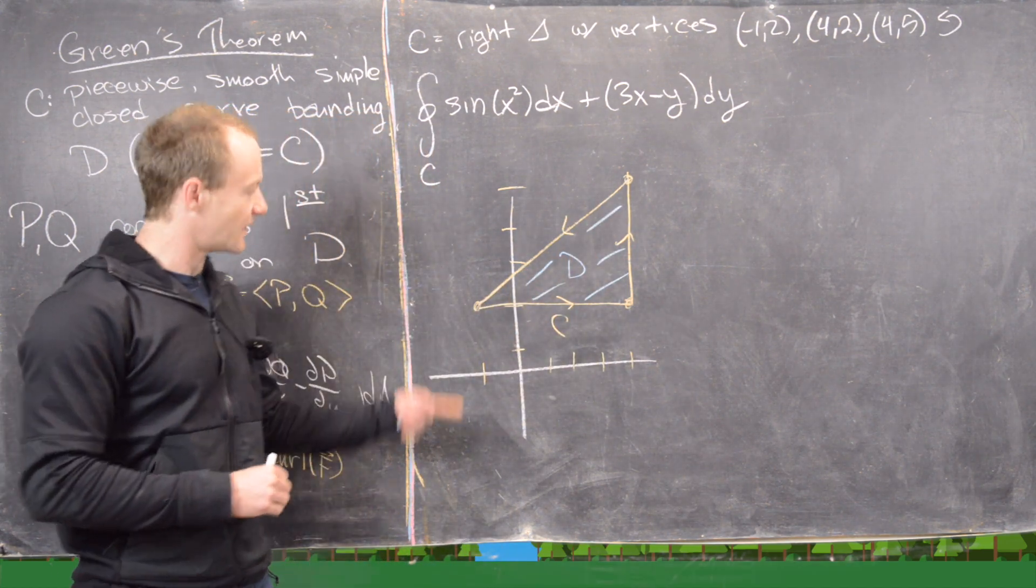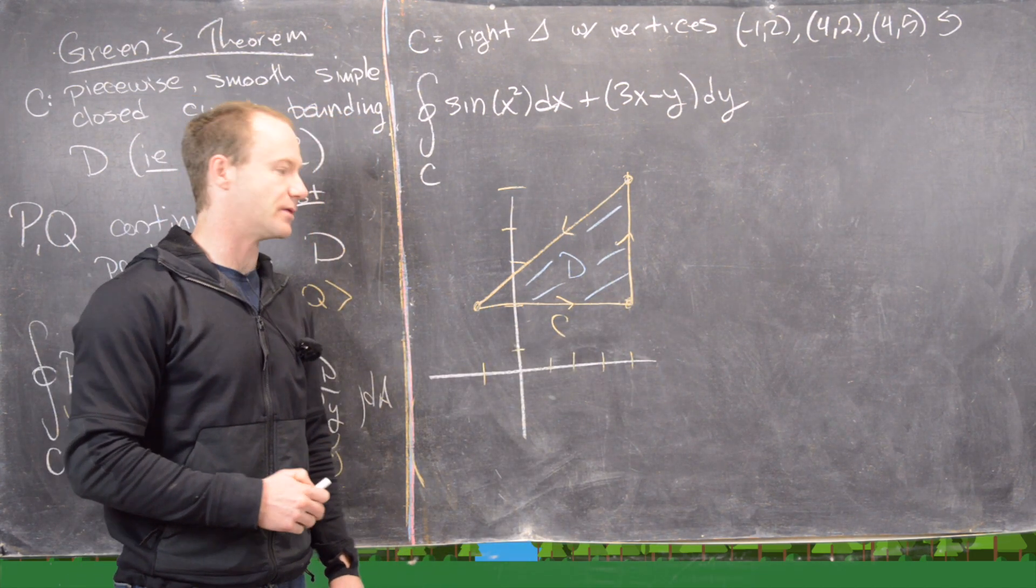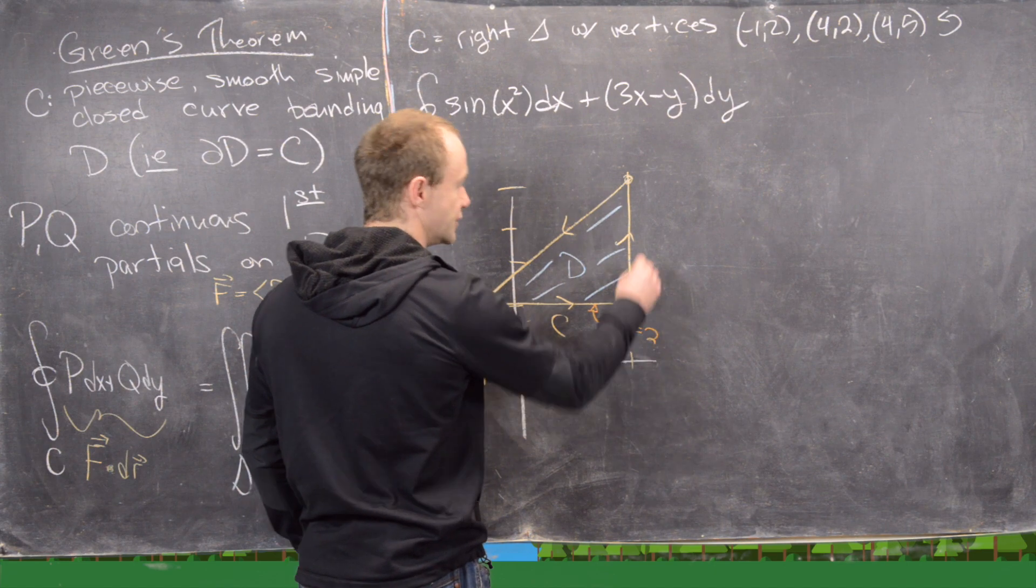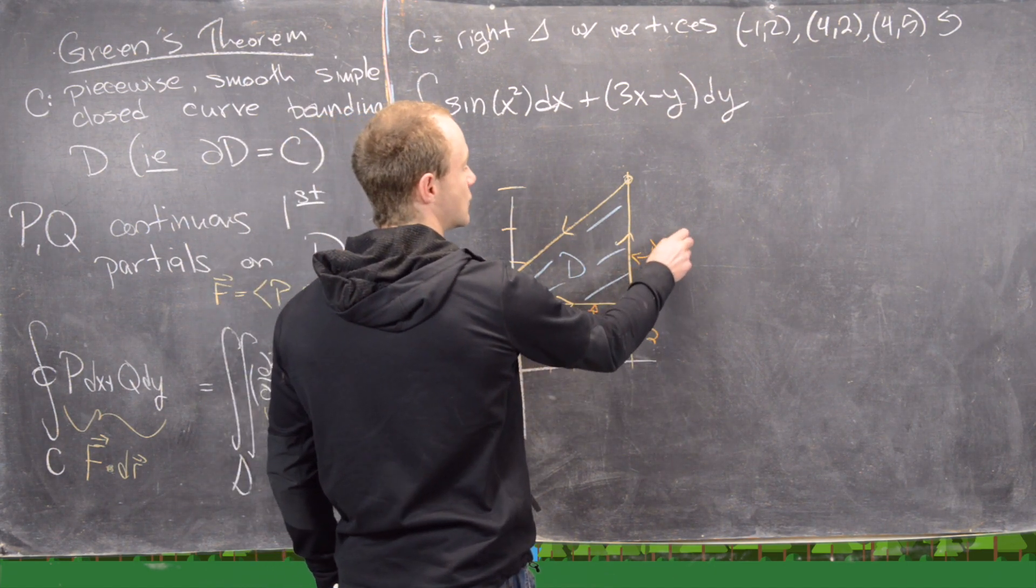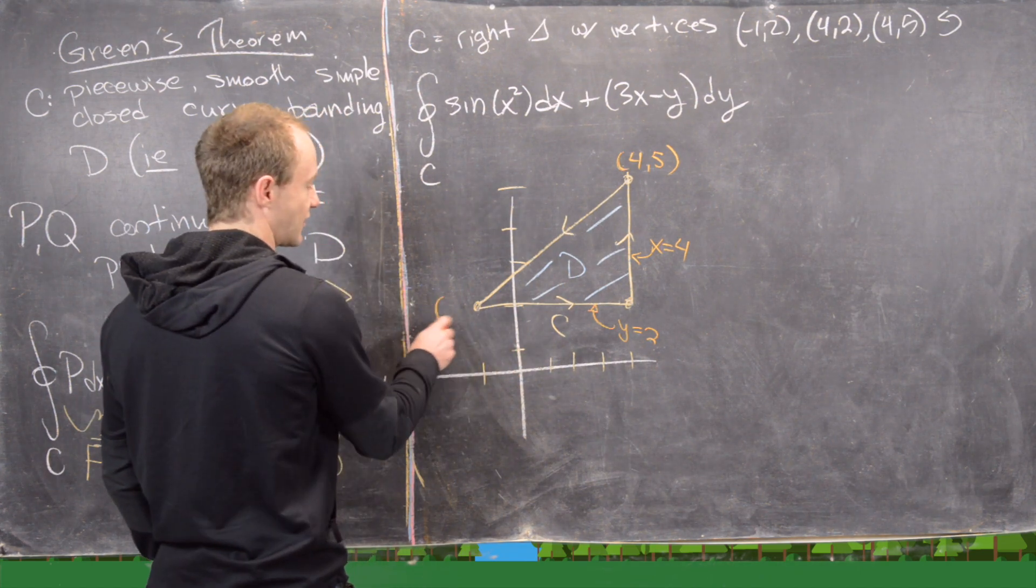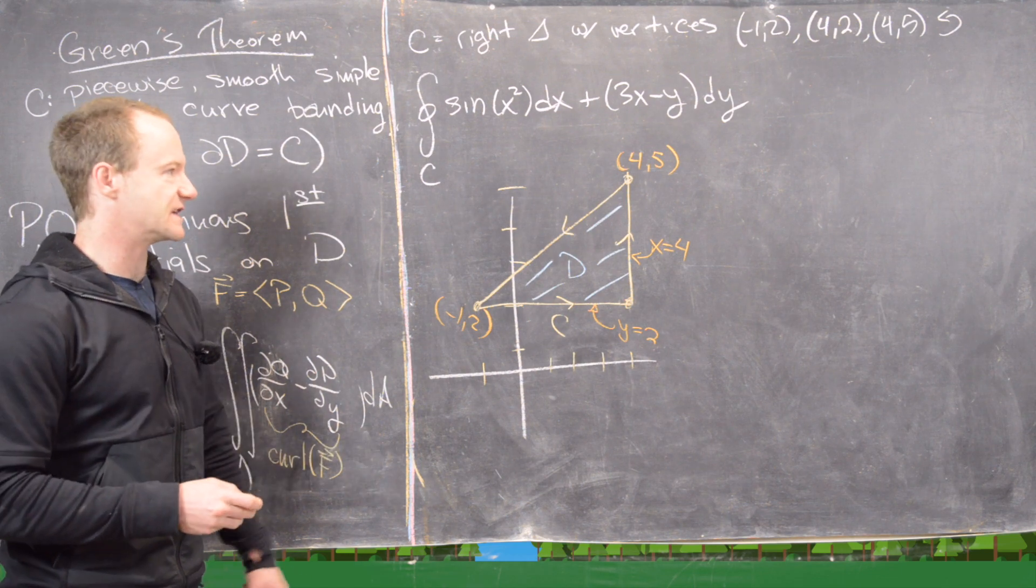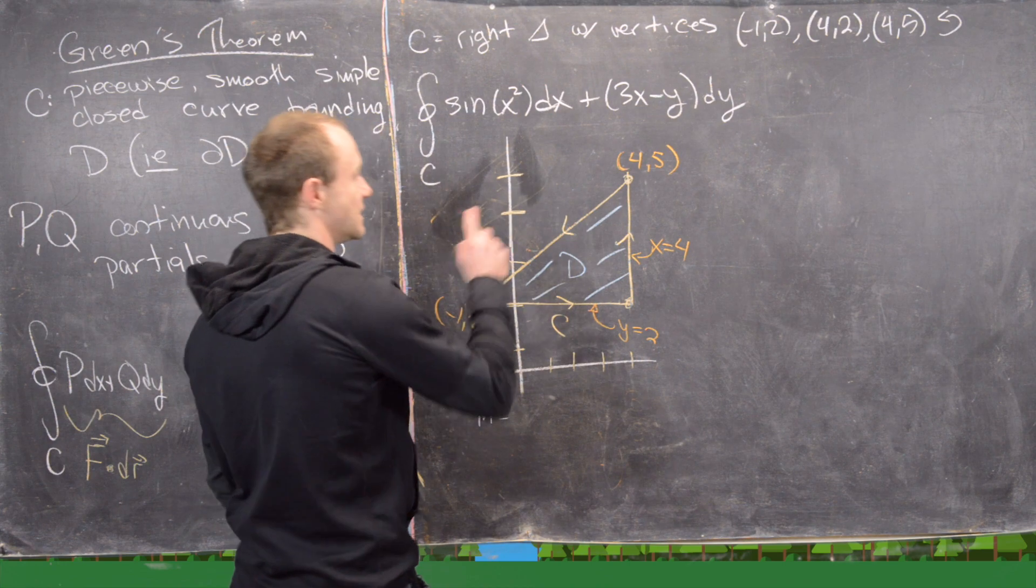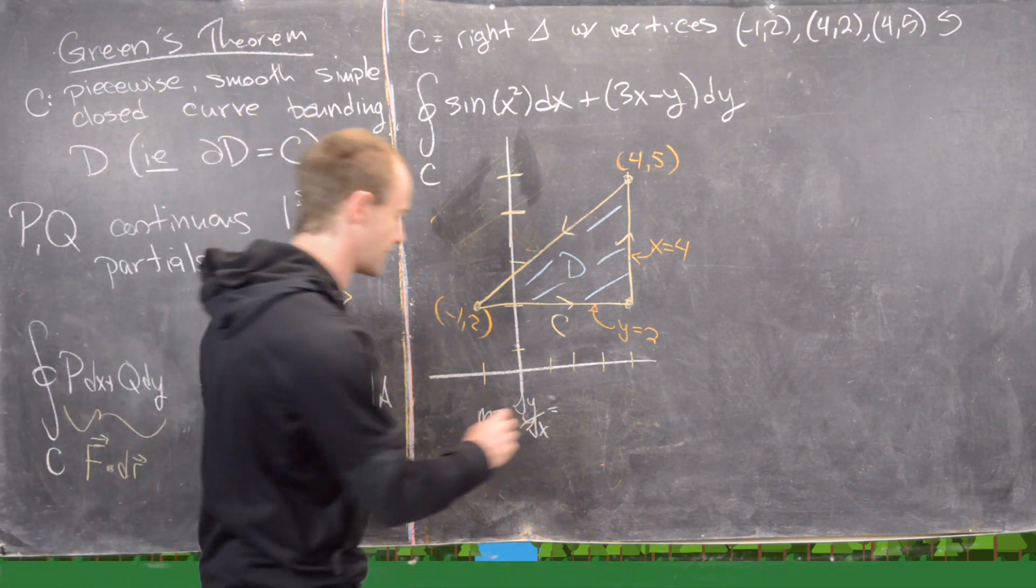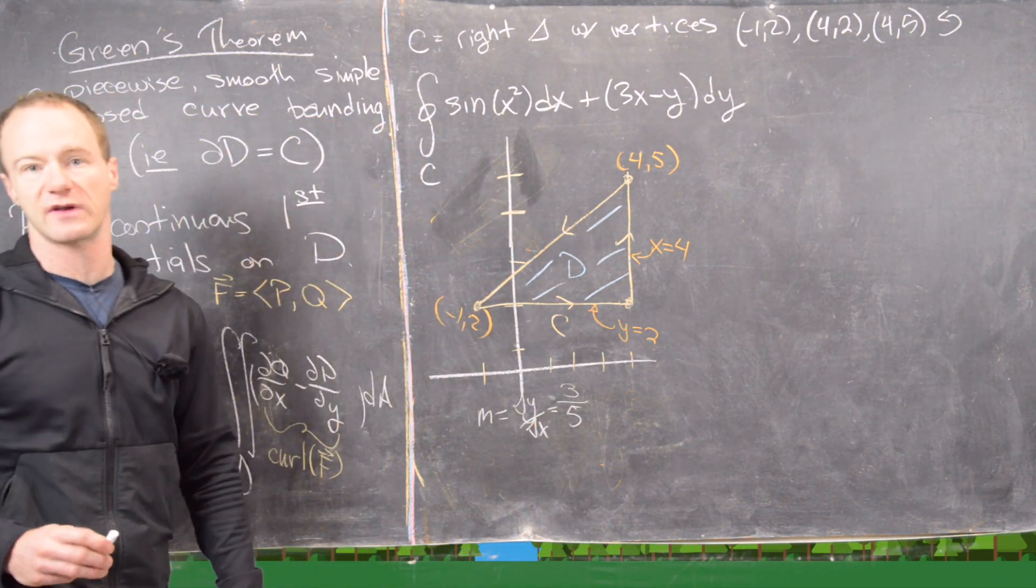What's nice is this is a horizontal line and this is a vertical line. So the setup of this double integral will be pretty simple. Notice this guy down here is the horizontal line, y = 2. This guy right here is the vertical line, x = 4. We can use the fact that this is the point (4,5) and this is the point (-1,2) to easily find a point-slope form of this line. Notice we need the slope first. That slope is change in y divided by change in x. Notice our change in y is 5 - 2, so that gives us 3. Our change in x is 4 - (-1), so that gives us 5. That makes our slope 3/5.